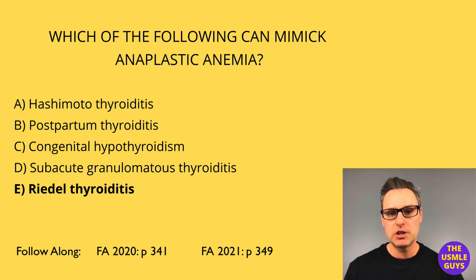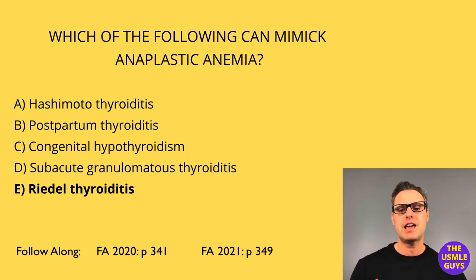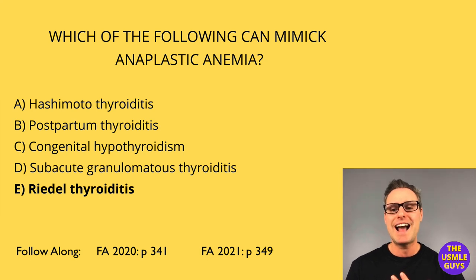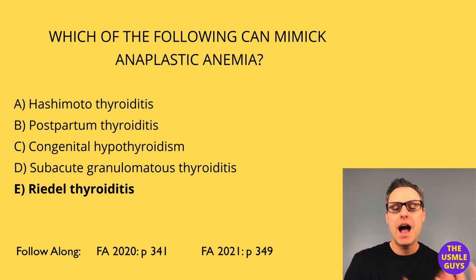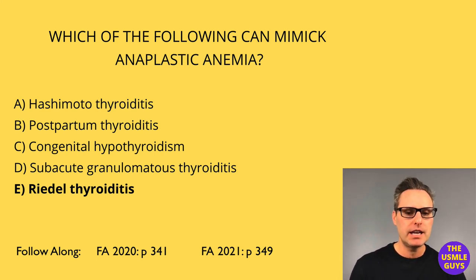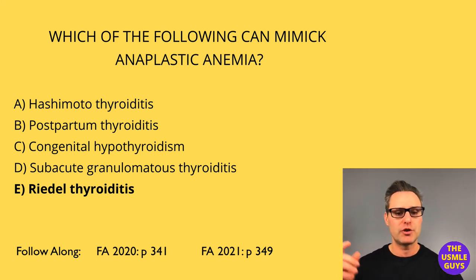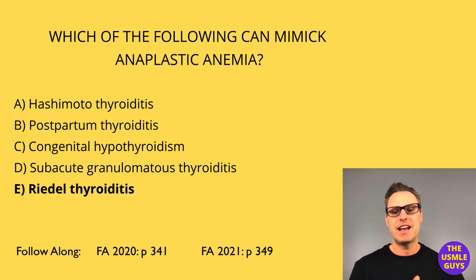Next, subacute granulomatous thyroiditis — also known as de Quervain's thyroiditis. This is also self-limited and usually follows a flu-like illness. Patients can be hyperthyroid early and then become hypothyroid later, so watch for someone who had symptoms of hyper but then developed symptoms of hypo. Histology will demonstrate granulomatous inflammation, labs will show elevated ESR, and patients typically have jaw pain and a tender thyroid.